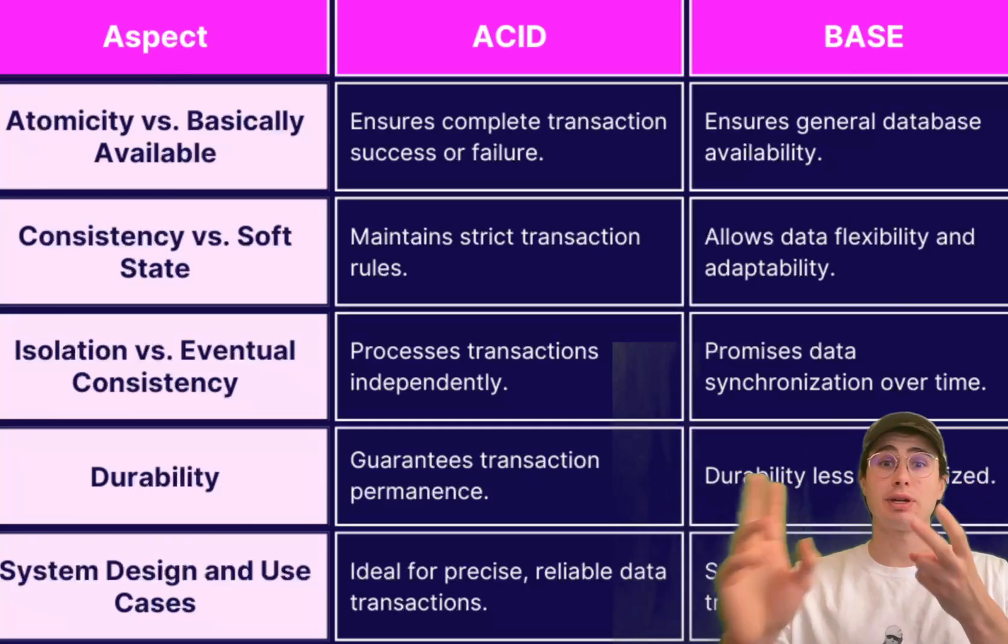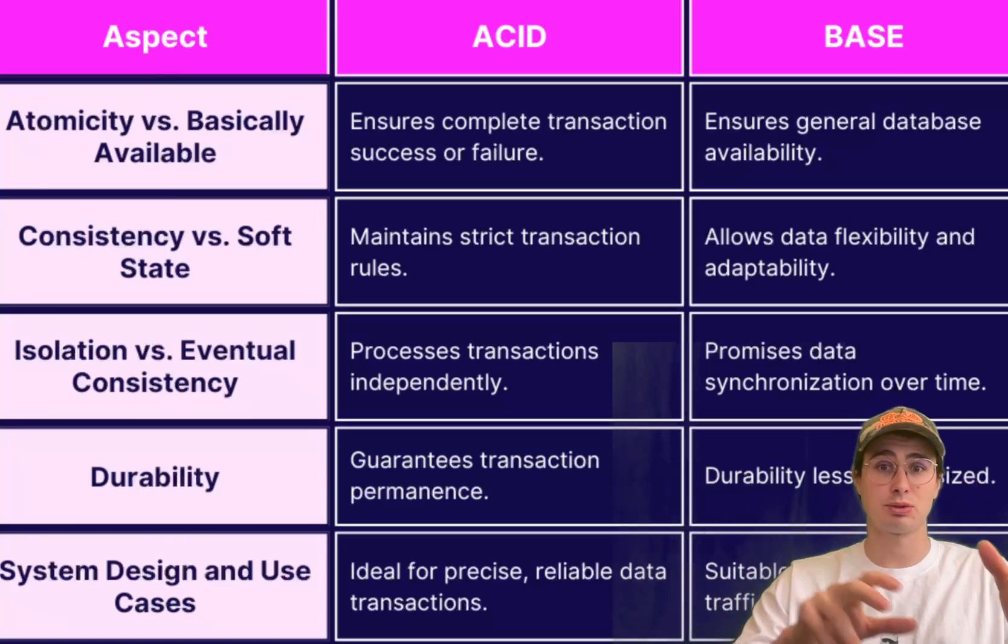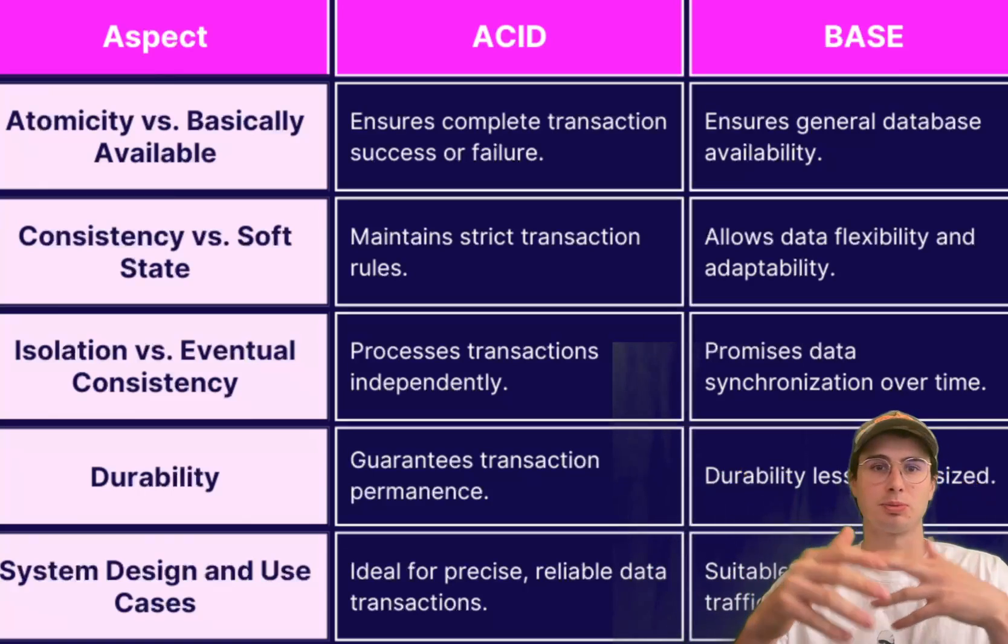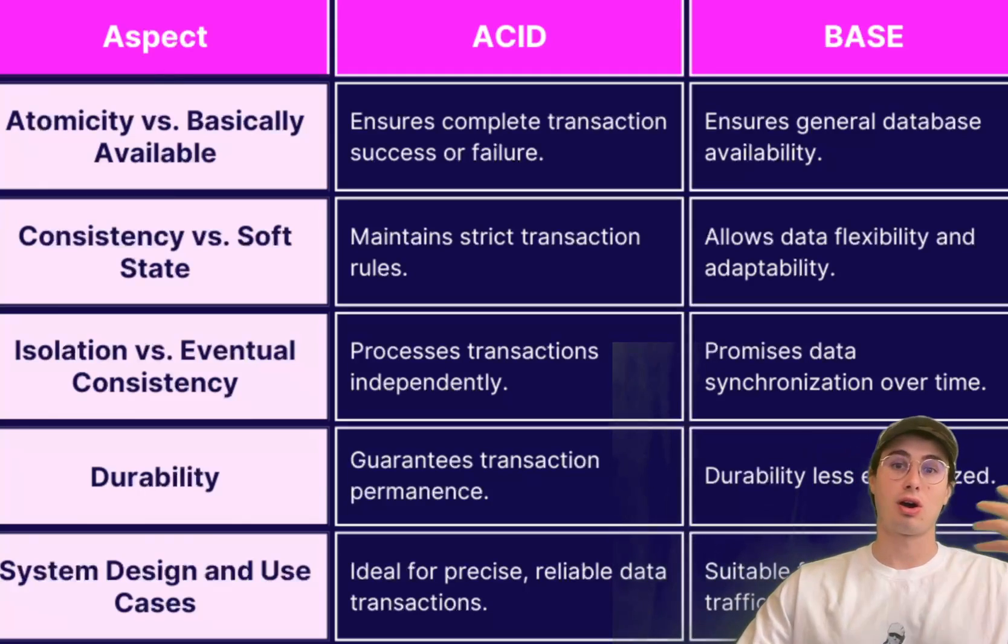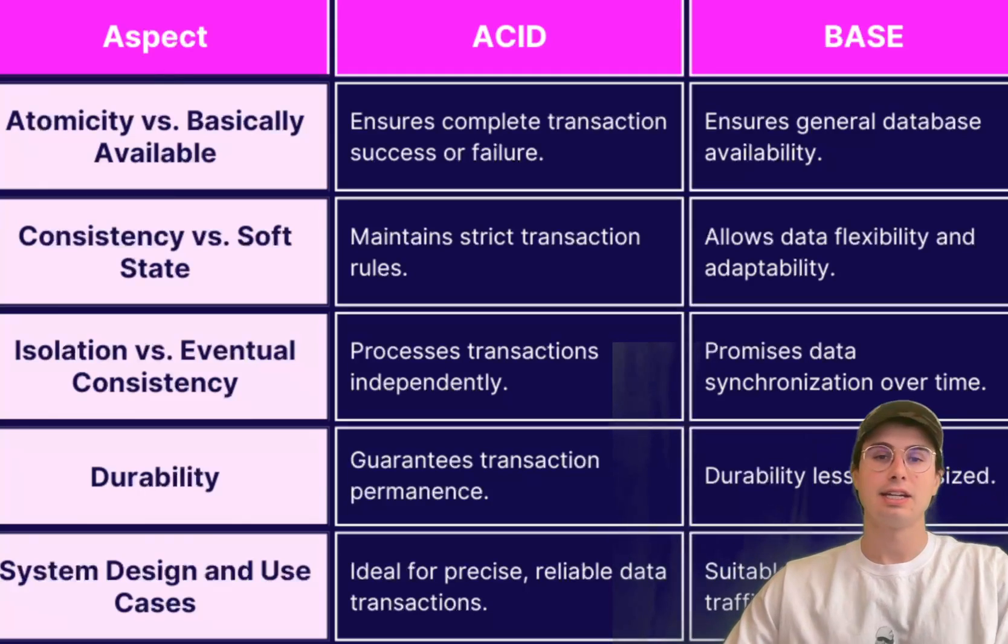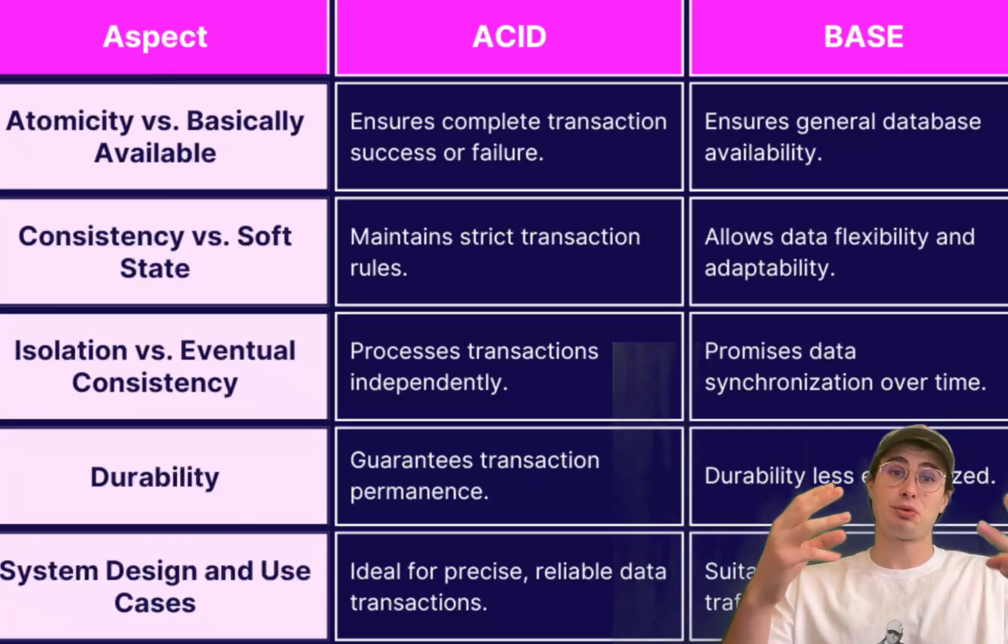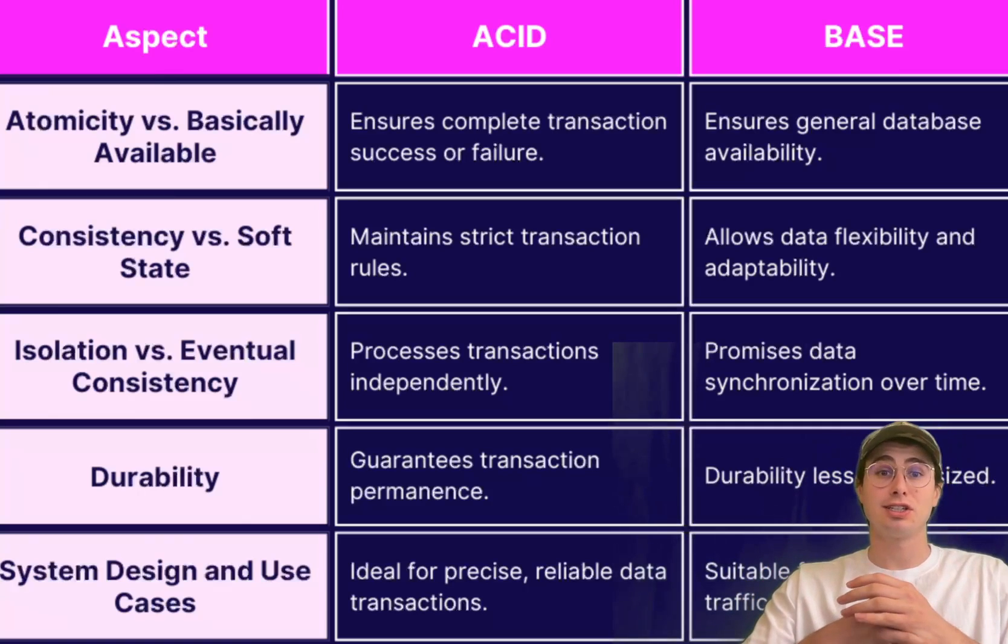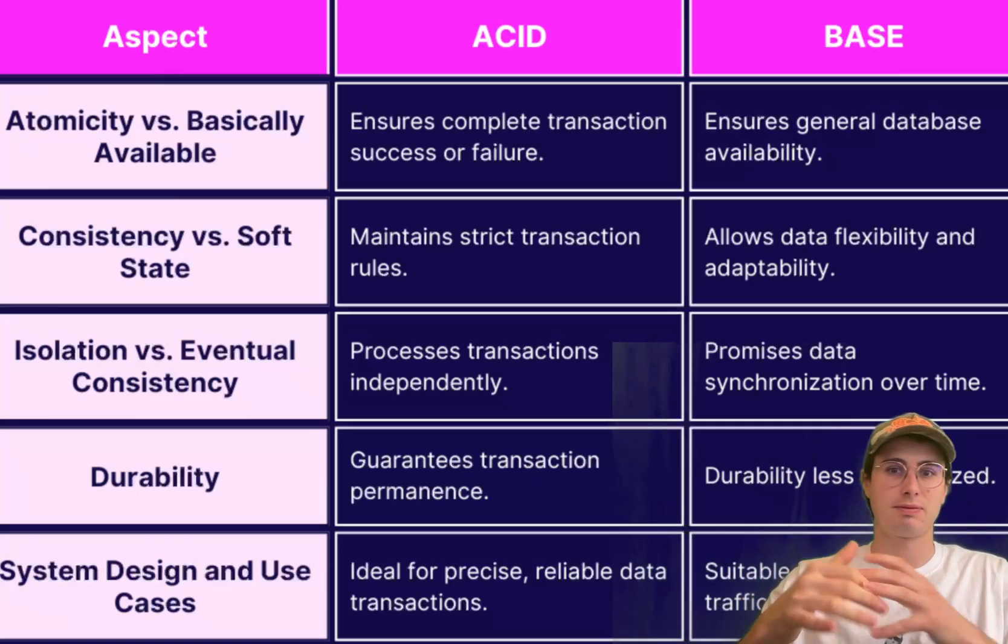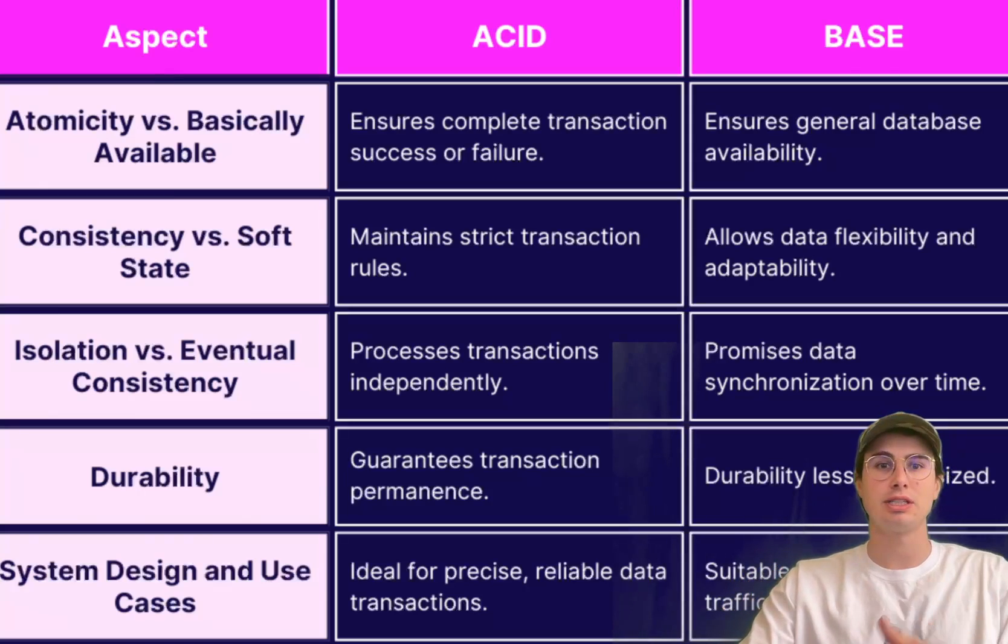Number two, evaluate your transaction requirements. Systems with complex transactions involving multiple operations or those requiring strong consistencies are ideal candidates for ACID databases. And then three, consider your system scale and performance needs. If the system demands high scalability or faces performance bottlenecks with ACID compliance, alternatives like basically available soft state eventual consistency, which I'm showing up here as kind of alternative, might be considered.